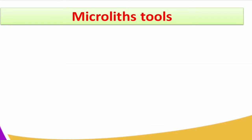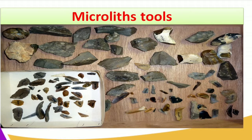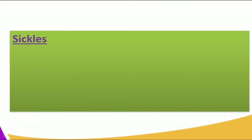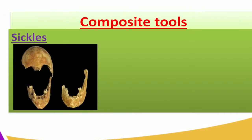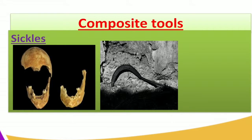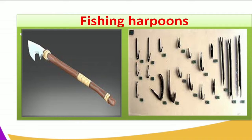Here are pictures of the collected microlith tools found in the Capsian industries. You can see examples of these small and well-defined tools. Other microlith tools include the fishing harpoons, which were used for fishing, as shown in the picture.